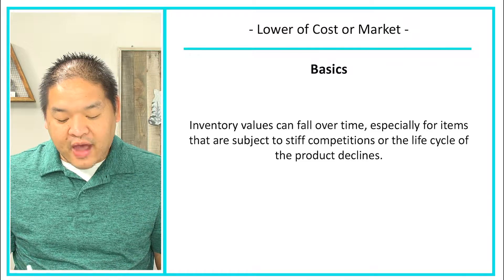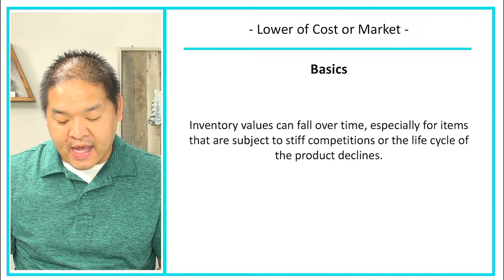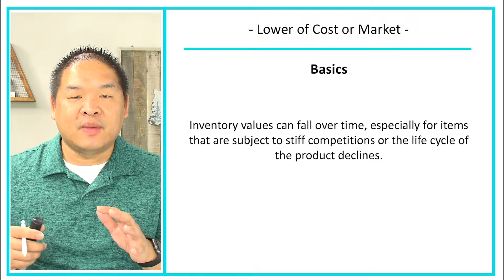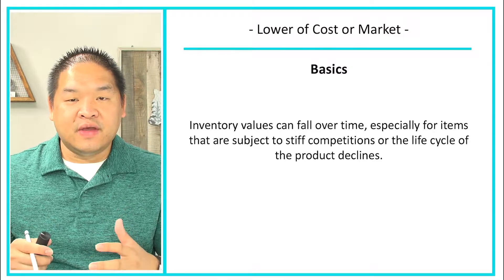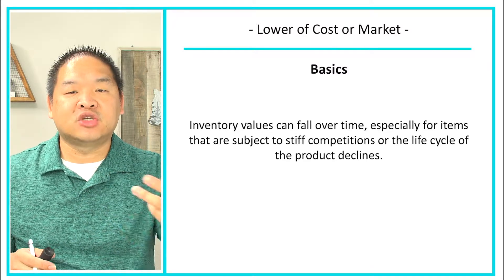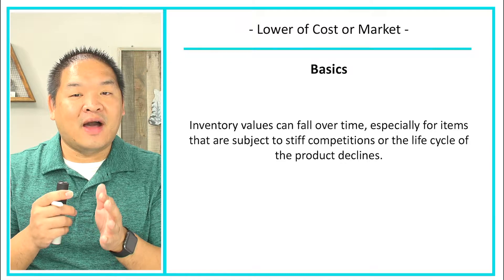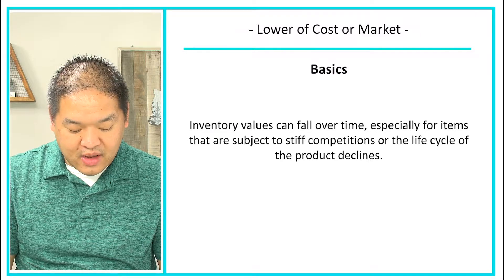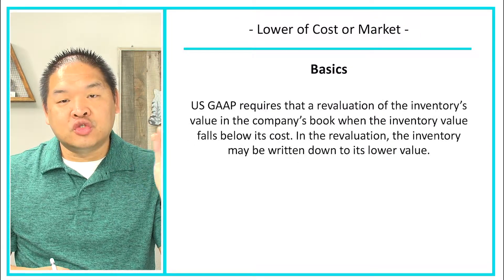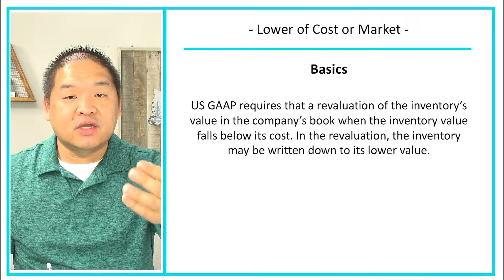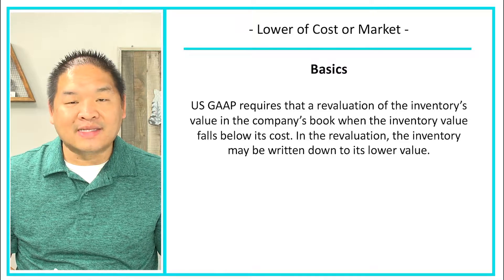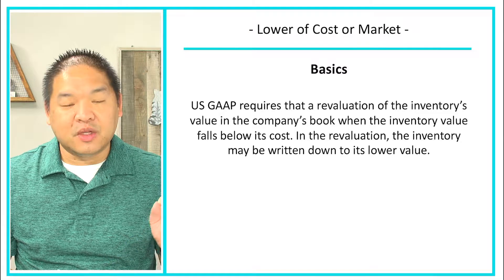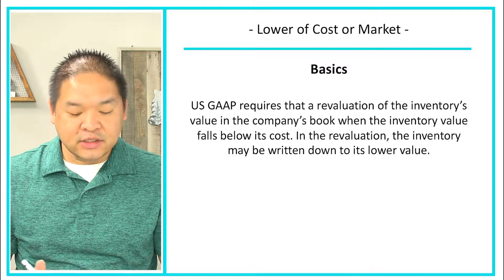Some basics: inventory values can fall over time, especially for items subject to stiff competition or a declining product lifecycle. As the lifecycle of the product declines, the value we could get from the market starts to decline. Hopefully it won't decline past its cost — what it costs us to make or buy — but it does happen. Because inventory values could fall below the cost incurred to acquire it, US GAAP requires a revaluation of the inventory value in the company's books.